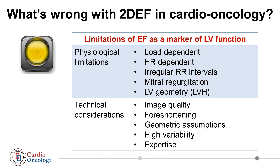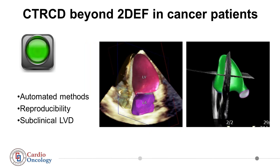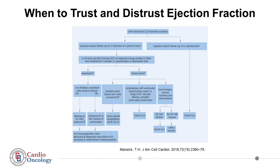The information we receive from ejection fraction is probably not enough in some clinical scenarios, like patients with HFpEF or in immunodosing, or if we want to diagnose stage 3 heart failure in a cancer patient. We have a lot of evidence that ejection fraction is a good prognostic marker. But when the question is about follow-up of left ventricular function and we detect an impairment of ejection fraction, strain helps us as a prognostic tool.